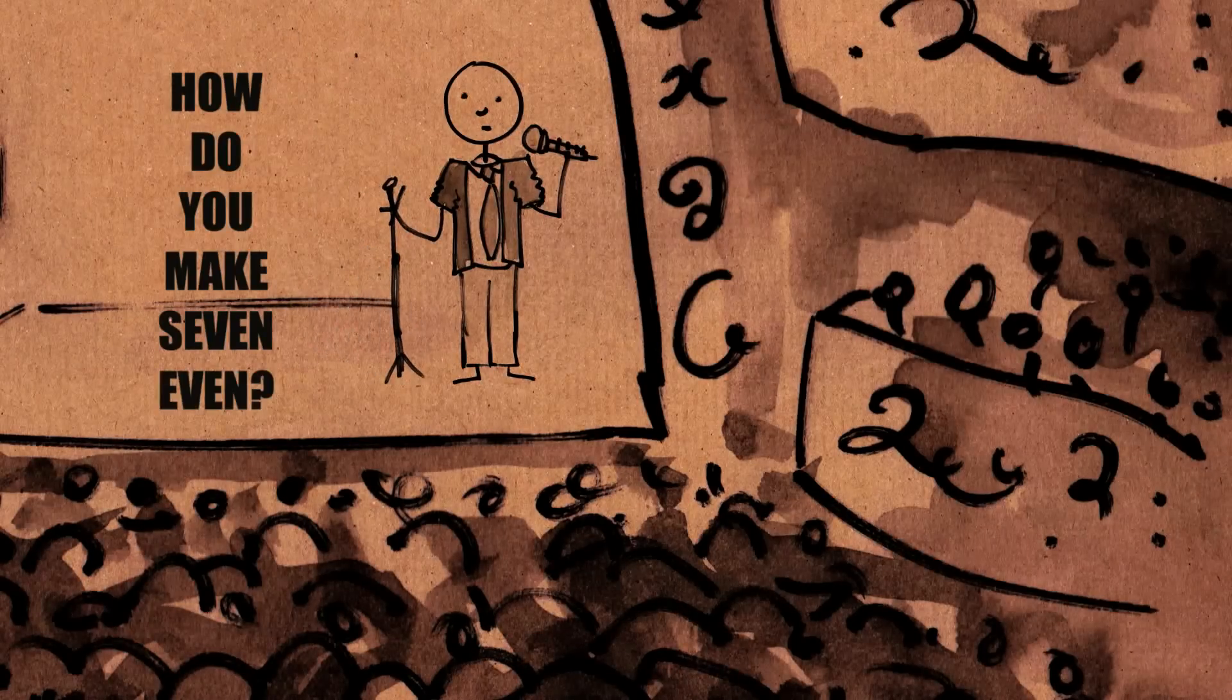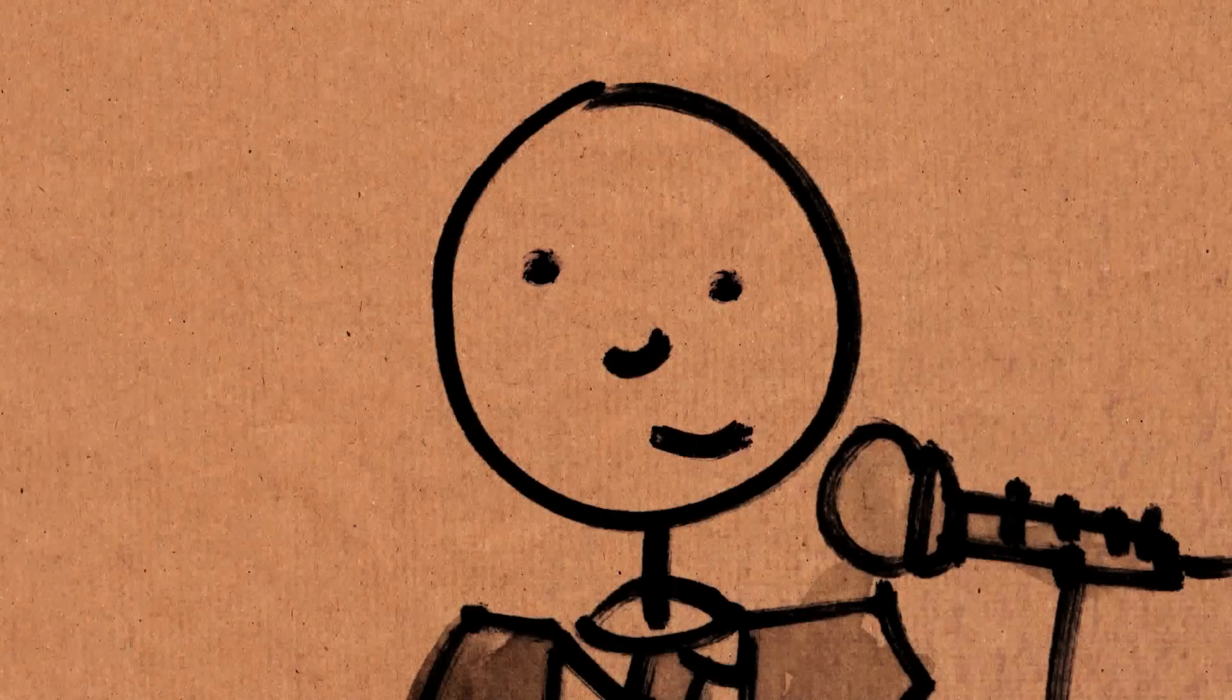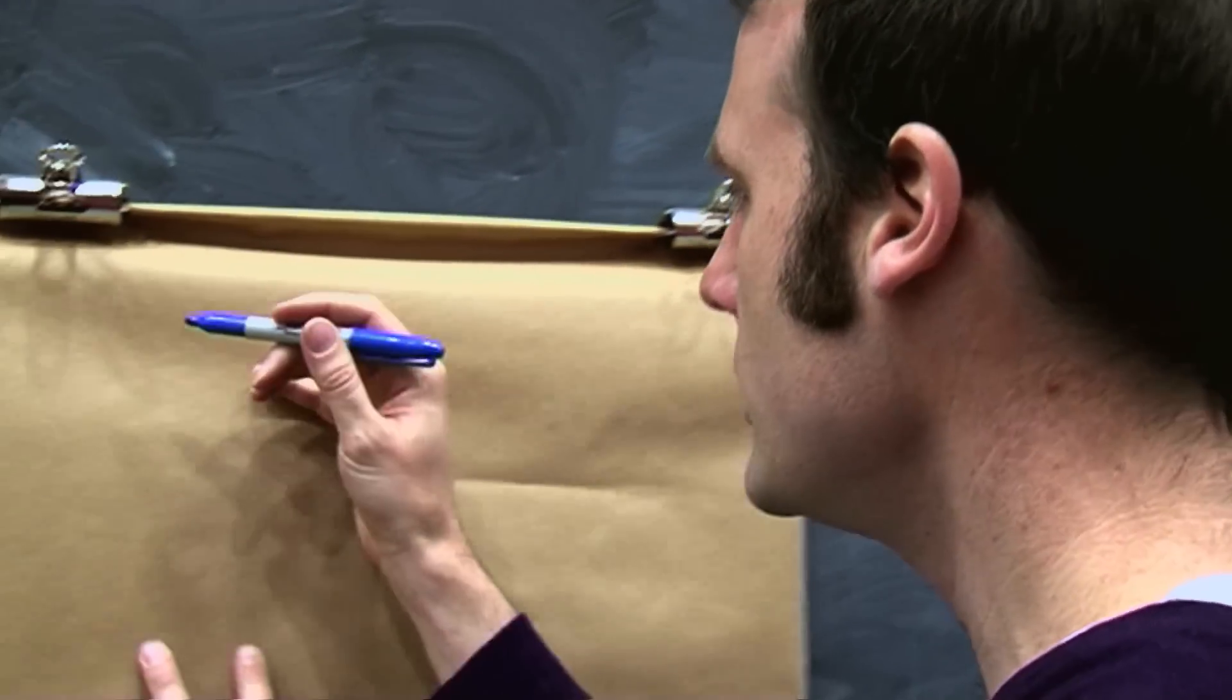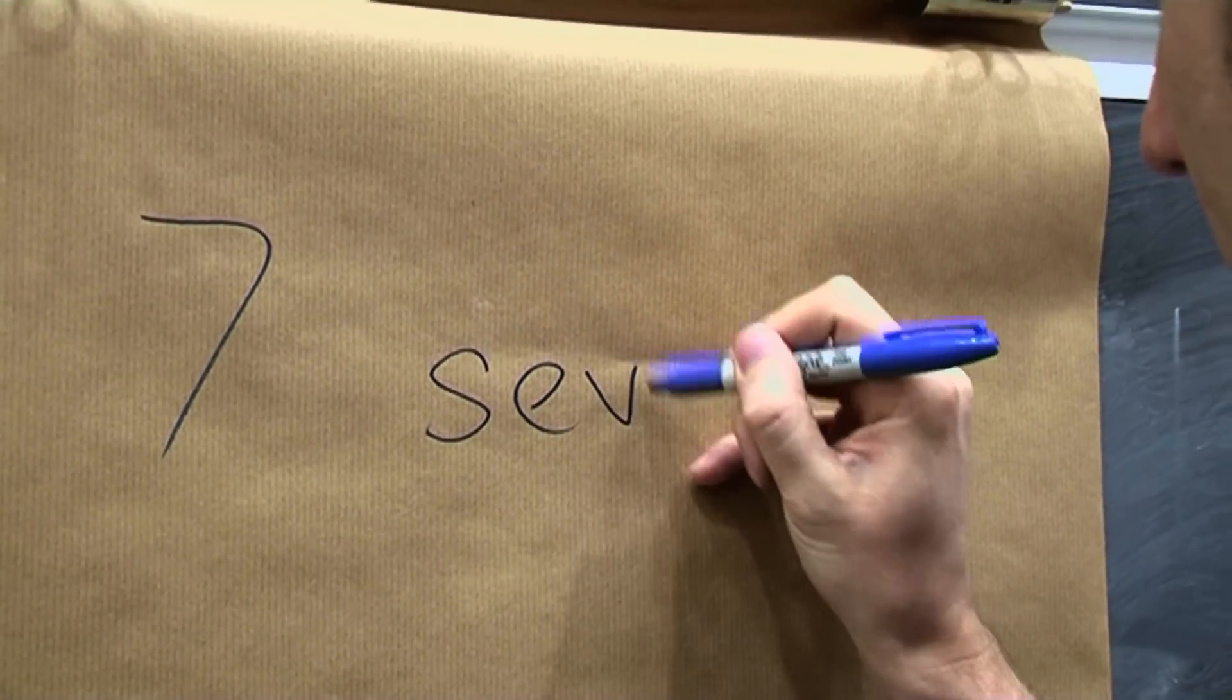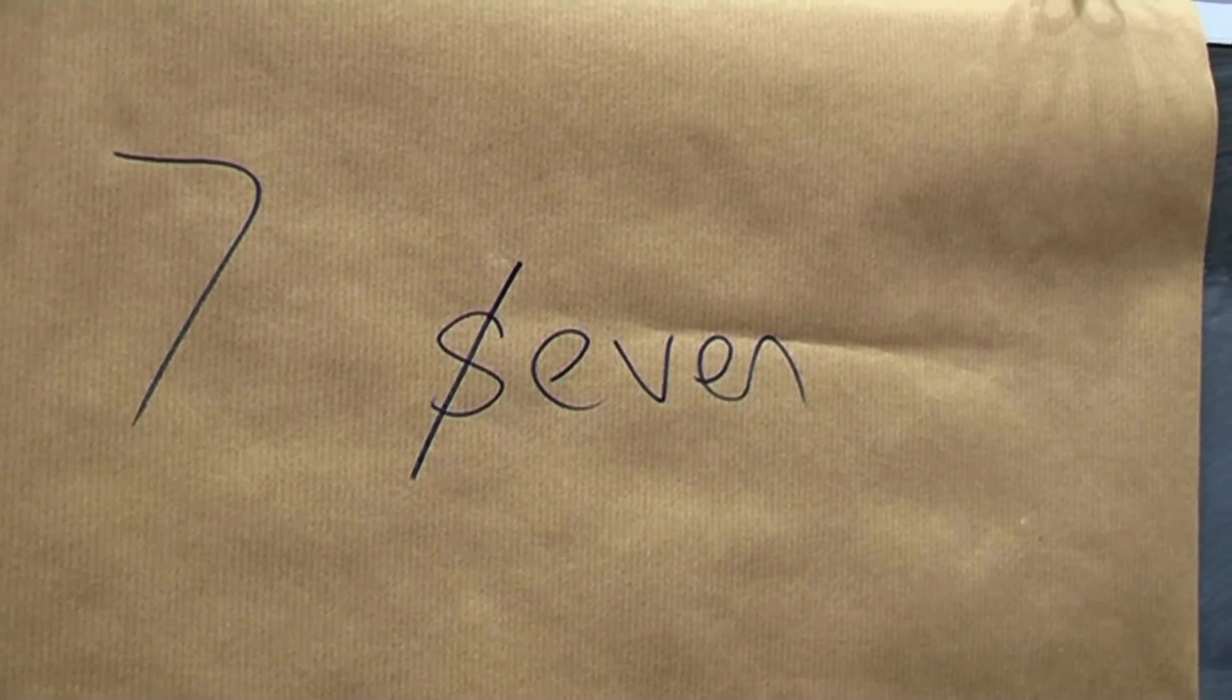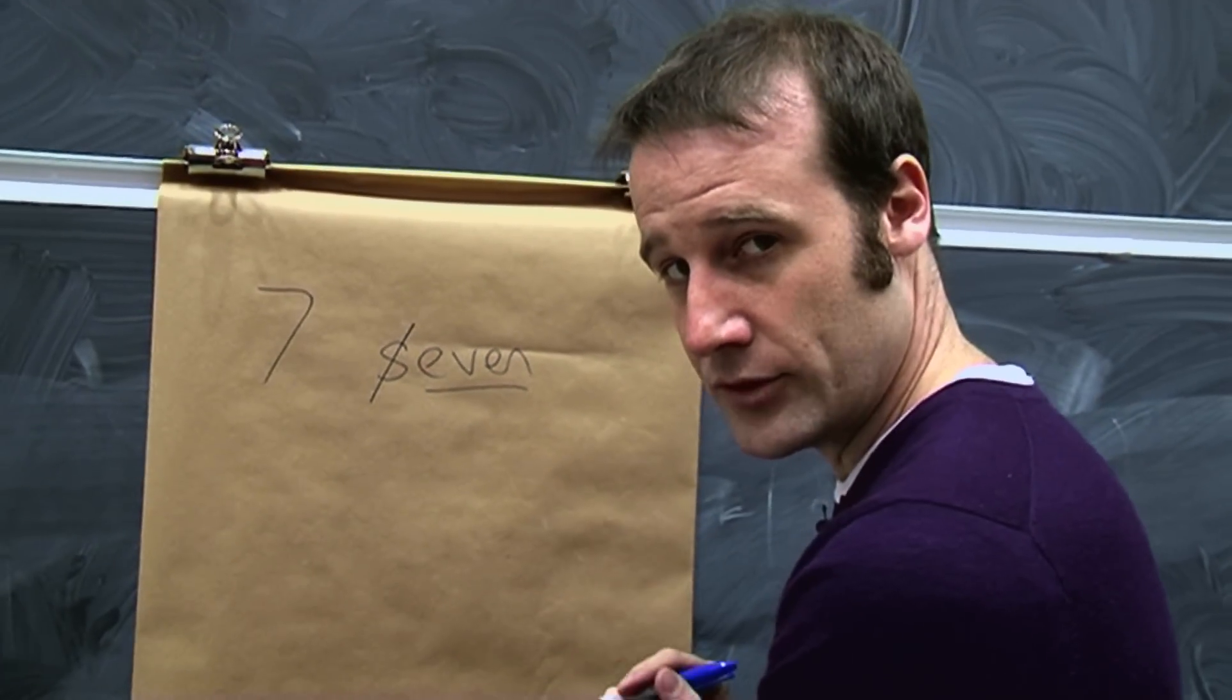How do you make seven even? Remove the S! I was promised number jokes, but I guess another English one is fine. So the number seven, if you write it out in this language called English, which you may have heard of, you spell it seven, and then if you remove the S, you're left with the English word even. No actual maths involved.